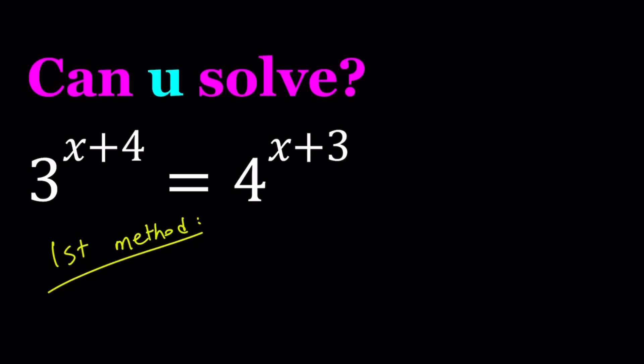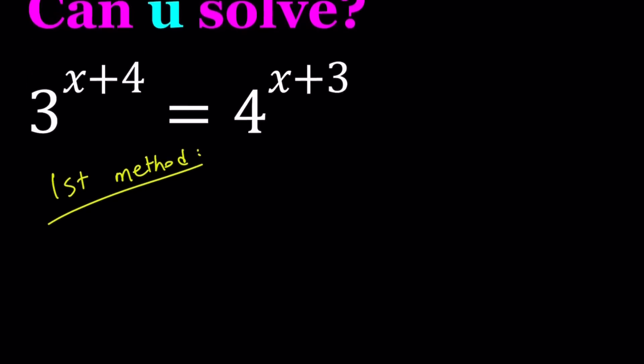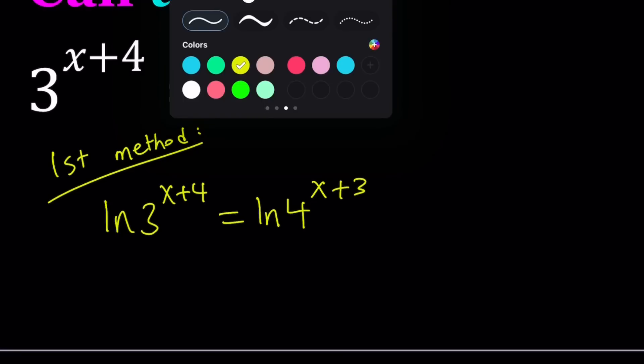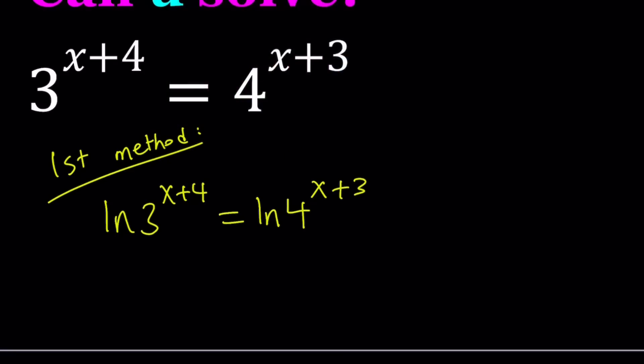For my first method, I'm going to take the natural log of both sides. Since these two things are equal, their natural logs are also equal. By using properties of logarithms, I'm going to go ahead and move the exponents and bring them down.